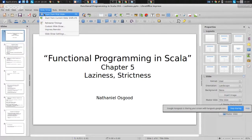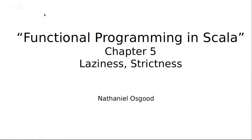Today we're going to be continuing on an important topic that we started talking about last time, which has to do with a key element of many functional programming languages: the presence of mechanisms to put in place non-strict computations, a subset of which are further called lazy computations. Does anyone remember from the book reading what it means for a computation to be non-strict or strict? A strict method will evaluate the arguments inside the method, but a non-strict one won't necessarily do that.